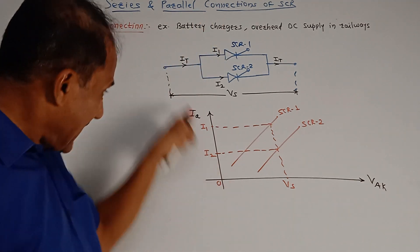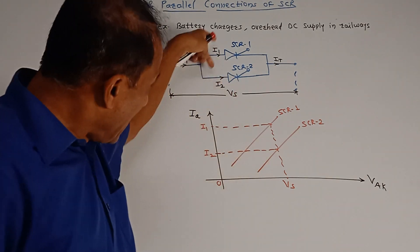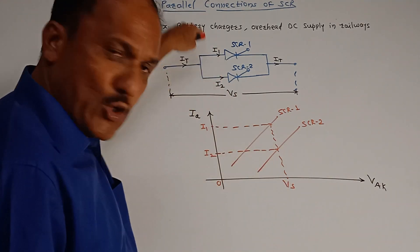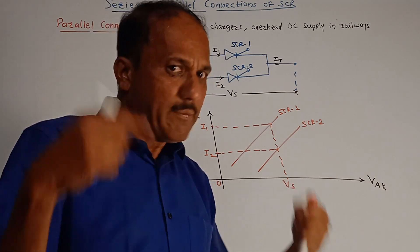In practical cases, the current flowing through each SCR may be different. Theoretically we can say currents I1 and I2 are equal, but practically, the current flowing through each SCR will be different.